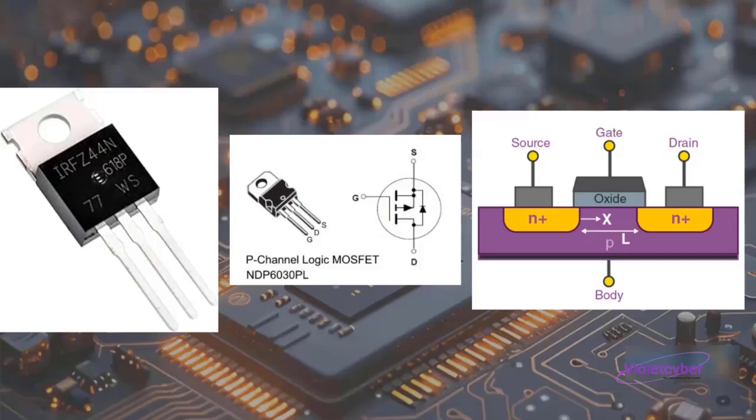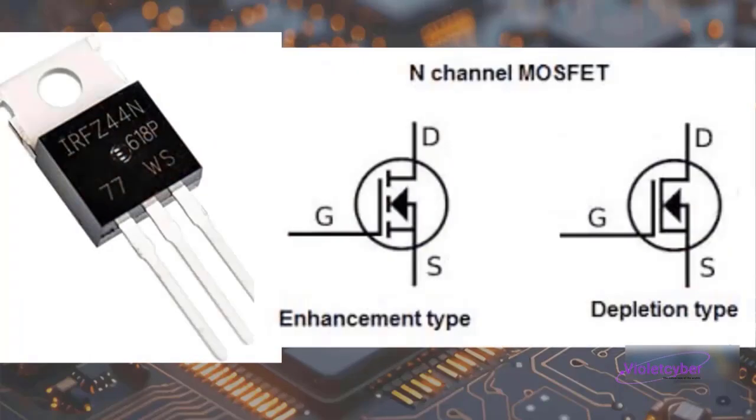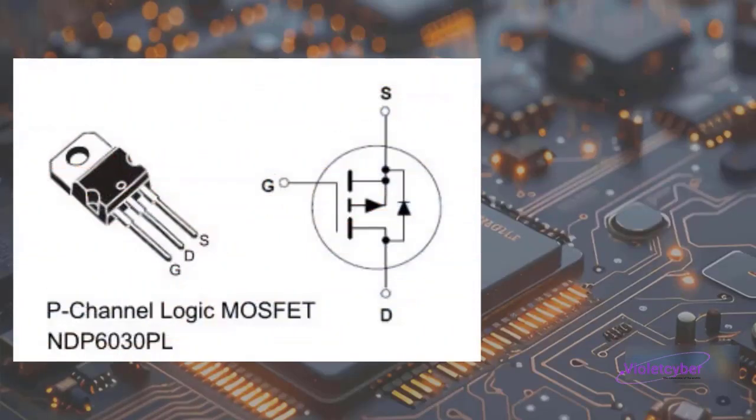MOSFETs are categorized into various types. We'll briefly mention these categories and provide short explanations for each. N-channel MOSFETs have two negative terminals, which is why they are referred to as N-channel.